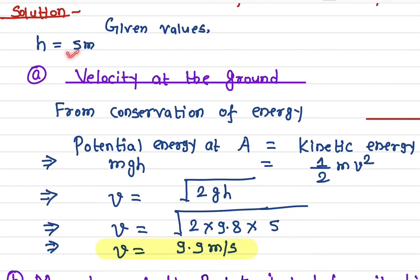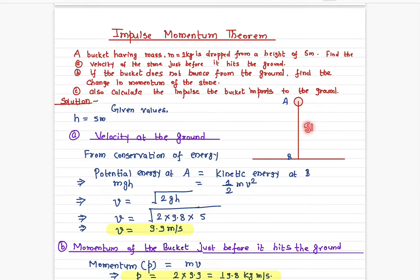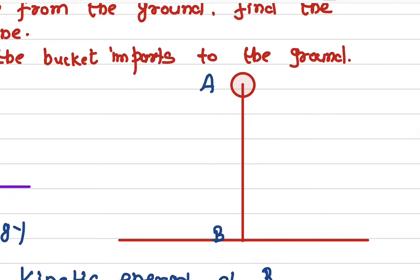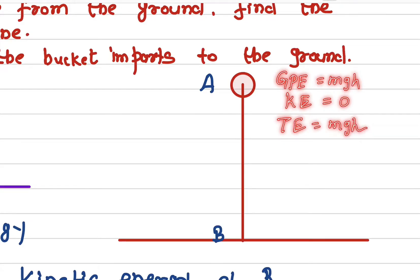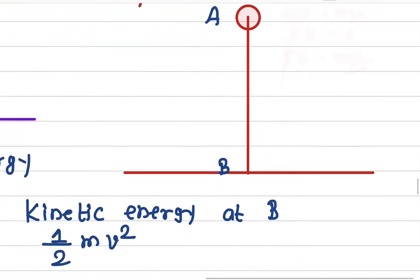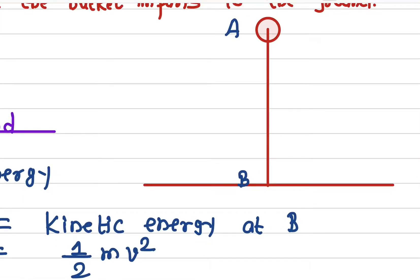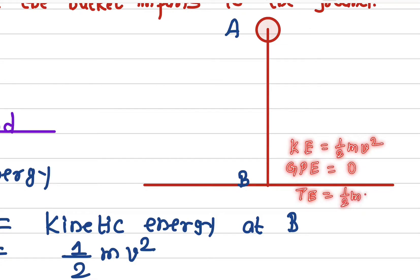We are given the height from which the ball is dropped, which is five meters. At point A, the ball has only gravitational potential energy, mgh, and zero kinetic energy, so total energy at point A equals mgh. At point B, just before hitting the ground, it has only kinetic energy equal to ½mv², and the gravitational potential energy is zero, so total mechanical energy at B is ½mv².